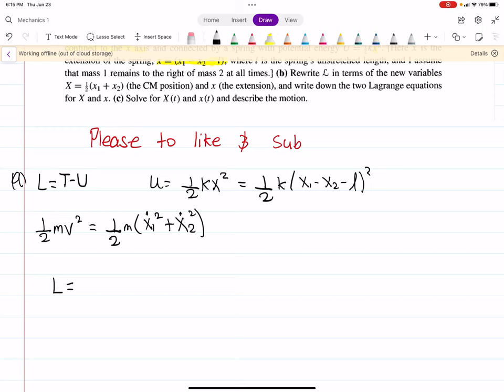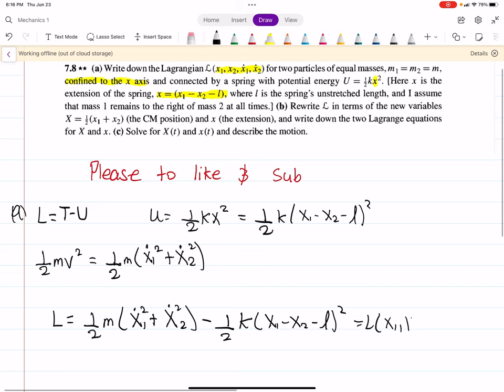So okay, the Lagrangian is very easy then. We can see then that the Lagrangian is just going to be 1 half m x1 dot squared plus x2 dot squared minus 1 half k x1 minus x2 minus L squared. So this, again, is Lagrangian with the components that they want up above: x1, x2, x1 dot, x2 dot.